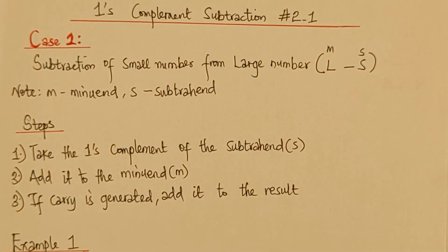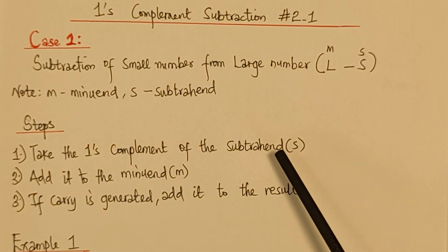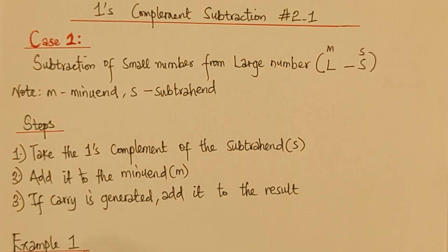So to that, we have to consider the rules which will be guiding us on this calculation. So the first one is to take the 1's complement of the subtrahend. The second one is whatever we have from this 1's complement of the subtrahend, we'll add it to the minuend. And the third one is if carry is generated, we have to add it to the result.